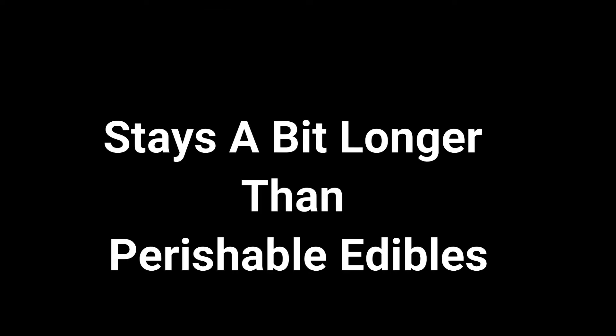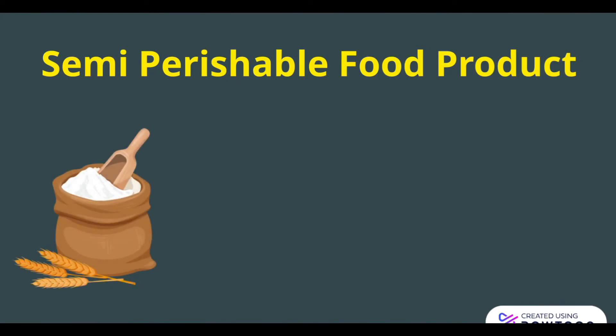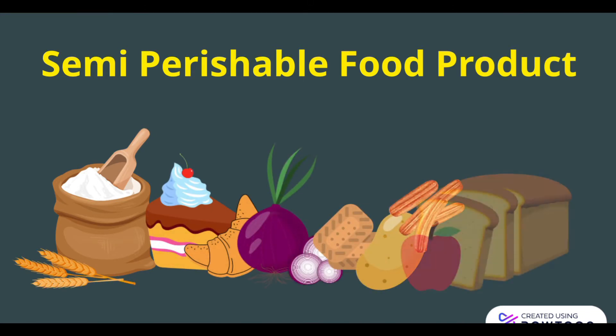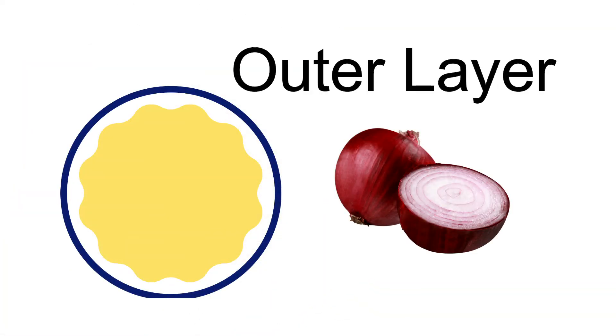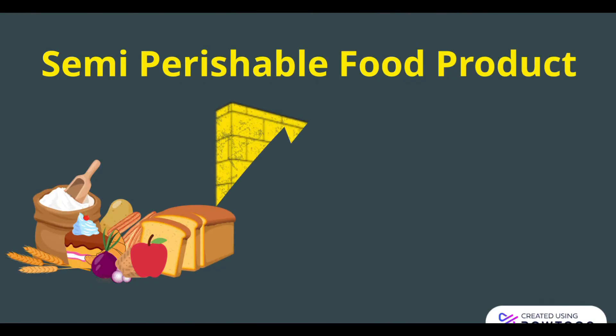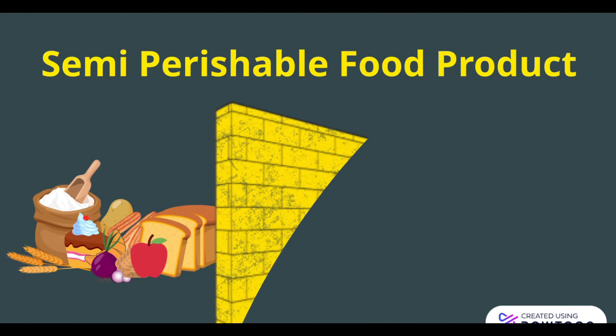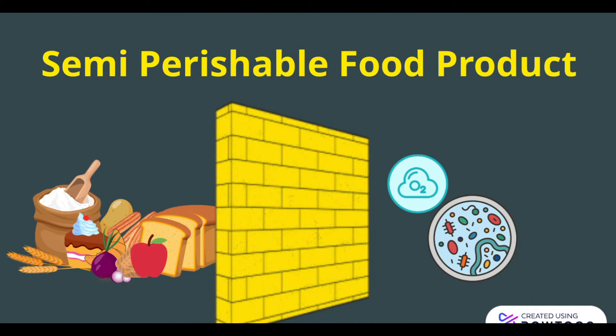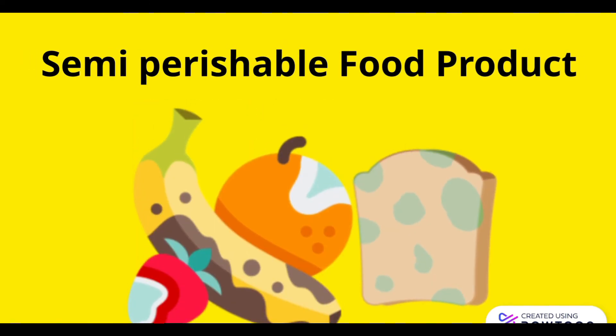Now, coming to our next type, which stays a bit longer than perishable food products, called semi-perishable food products — like potato, biscuit, namkeens, onion, flour, semolina, apples, bread, cakes, pastries, etc. But what makes them last a bit longer? Their outer layer or hard skin. Basically, their outer layer protects the inner material from the outside environment, microorganisms and oxygen. But once they come in contact with the environment, they start to spoil.